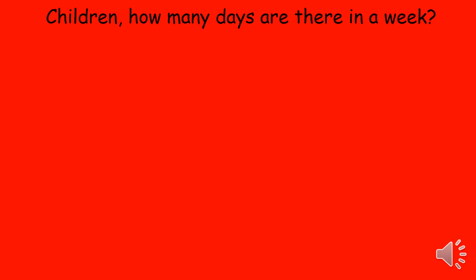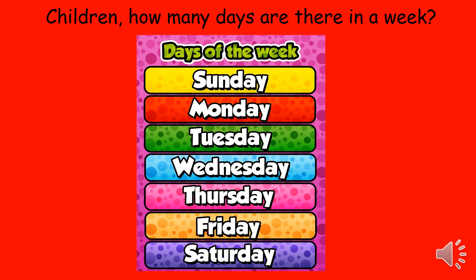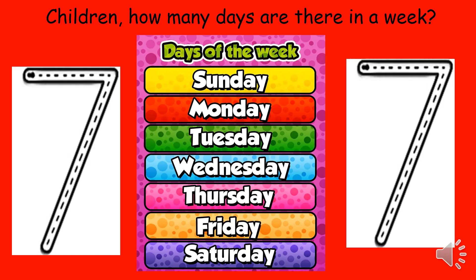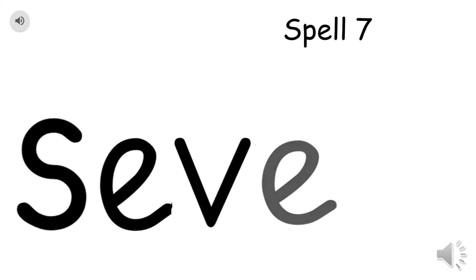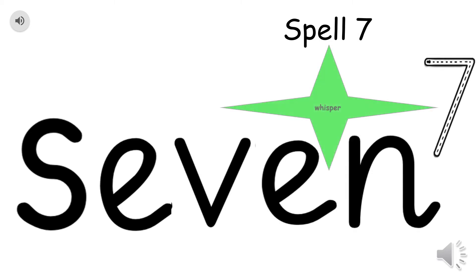How many days are there in a week? Everyone knows that we have 7 days in a week. And we are going to spell number 7: S-E-V-E-N, 7. Now let's whisper number 7: S-E-V-E-N, 7. Well done. Here is spell number 7.